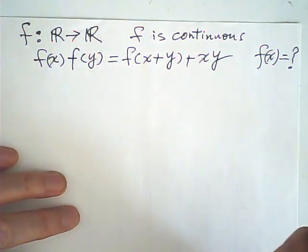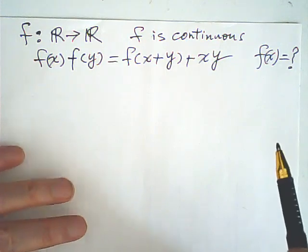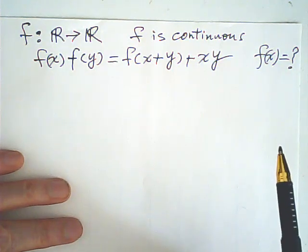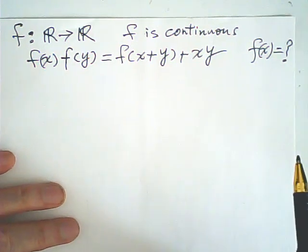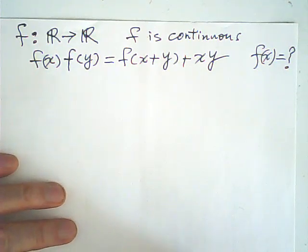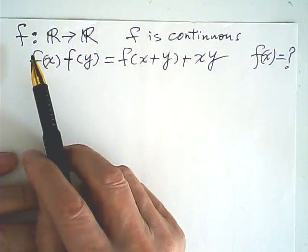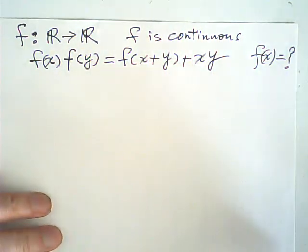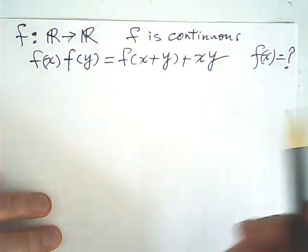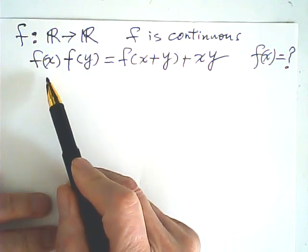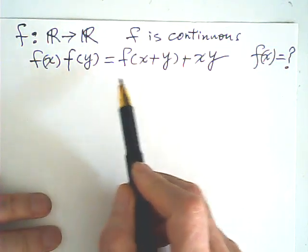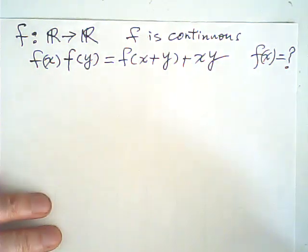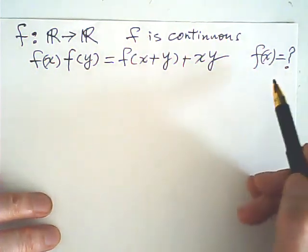I saw this functional equation question on YouTube. I have my own way to do it, and it looks better — that's what I'm sharing with you. Given that function f is from the real numbers to the real numbers, f is continuous and differentiable. Given that f(x) times f(y) is equal to f of x plus xy. We are looking for f(x).